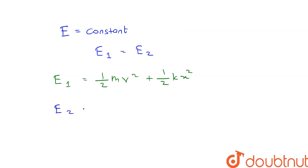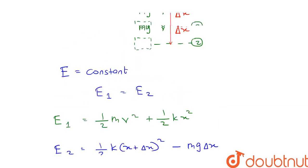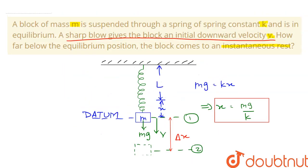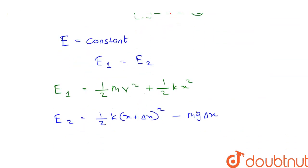At section 2, the potential energy stored in the spring will be half k times x plus delta x whole squared minus mg delta x. Since the block is going downwards, therefore there will be loss in gravitational potential energy. That is why we have put a negative sign here.